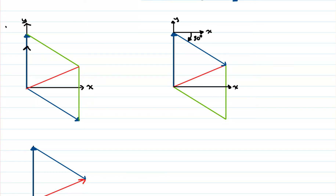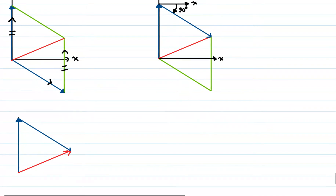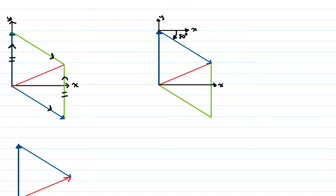This side is parallel to this side and they have the same direction. The length of this side is the same as the length of this side — these two are parallel lines. The same thing applies for F1: this line is also parallel to this line. They have the same direction and the same length, so these green lines are parallel. Where these parallel lines intersect, let's call that point B. We will draw from the origin to point B our resultant force.